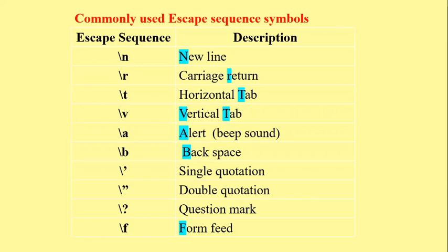If your system has built-in audio or is connected with speakers, backslash a generates a beep sound — like the beep sound you sometimes hear when switching on the system. Backslash b stands for backspace. When you press the Backspace key on your keyboard, the cursor erases the character to the left. Backslash b moves the cursor one position to the left hand side.